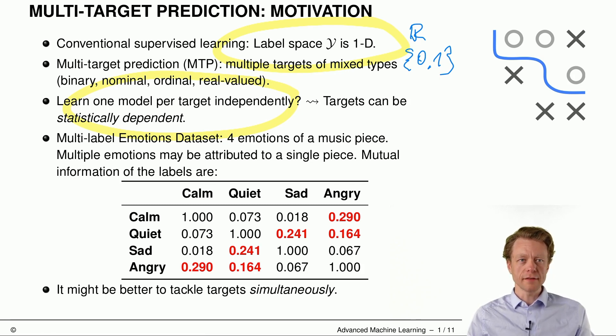Here is a motivating example. We have the emotions data set. This has four emotions of a music piece, so calm, quiet, sad, and angry, and these can be four different labels. And the important thing is that each music piece can have 0, 1, 2, 3, or all of those labels. So it's a binary for each of the four targets here.